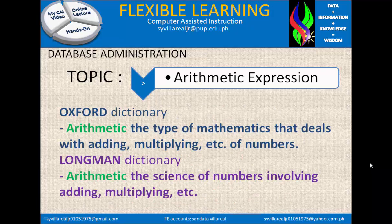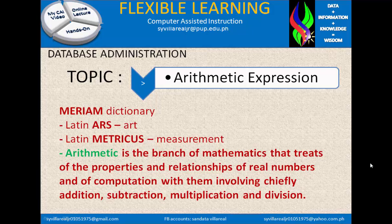Now, what is arithmetic? In the Oxford Dictionary, arithmetic is a type of mathematics that deals with adding, multiplying, etc. of numbers. In the Longman Dictionary, arithmetic is the science of numbers involving adding, multiplying, etc. In the Merriam Dictionary, arithmetic came from the Latin word 'ars', meaning art, and Latin 'metricus', meaning measurement — so arithmetic is the art of measurement. Merriam defines arithmetic as the branch of mathematics that treats the properties and relationships of real numbers and computation involving addition, subtraction, multiplication, and division. In summary, it concentrates on the MDAS rules we learned in elementary and high school.